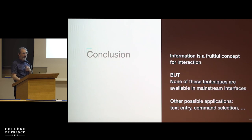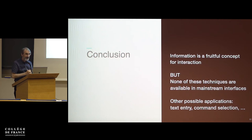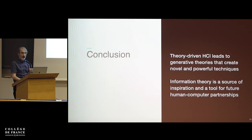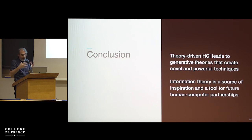In conclusion: information is a very fruitful concept for interaction. It is disappointing that none of these techniques I've shown are in any commercial product today, even though they improve interaction efficiency. The use of information as a concept has been applied to text entry — especially because of the low entropy of text — command selection, and other applications. Theory-driven HCI leads to generative theories that create novel and powerful techniques. Information theory is one of these source theories, both as a source of inspiration and as a tool to create future human-computer partnerships.